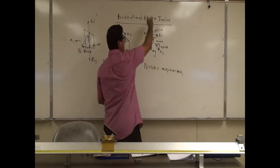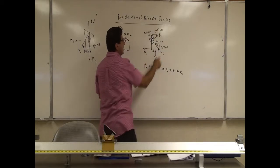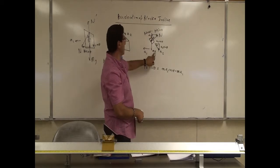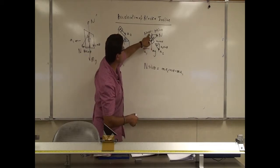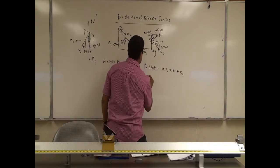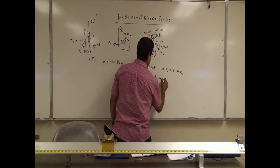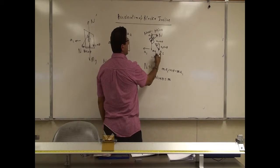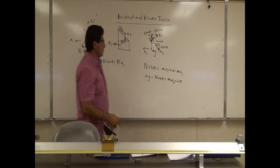In the vertical direction, the block is also accelerating downward at A2 sine theta, so mg has to be larger than N cosine theta. The weight has to beat N cosine theta in order for it to accelerate down. So: mg minus N cosine theta equals little m times A2 sine theta.